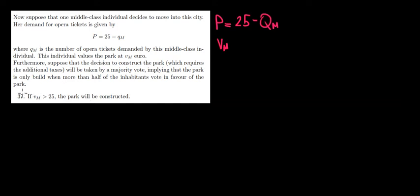Let's have a look at question 37 now. So what do we have here? We have one middle class individual who decides to move into this city and the demand for the opera tickets is the following.